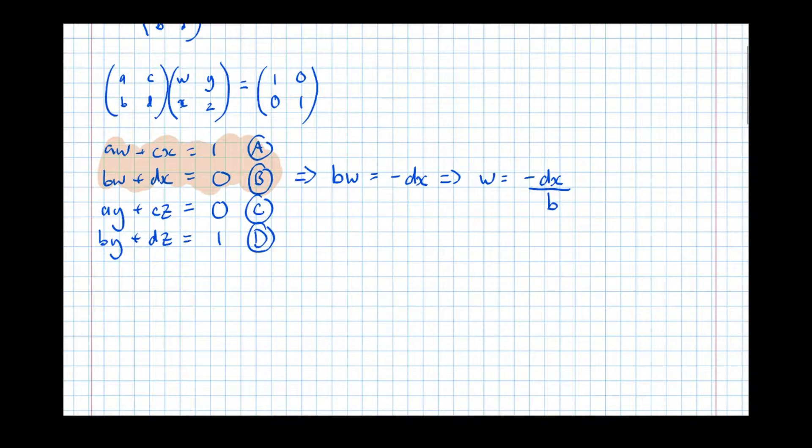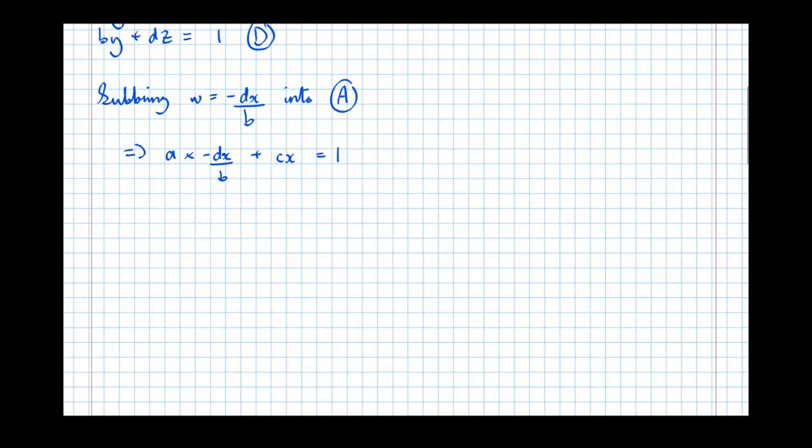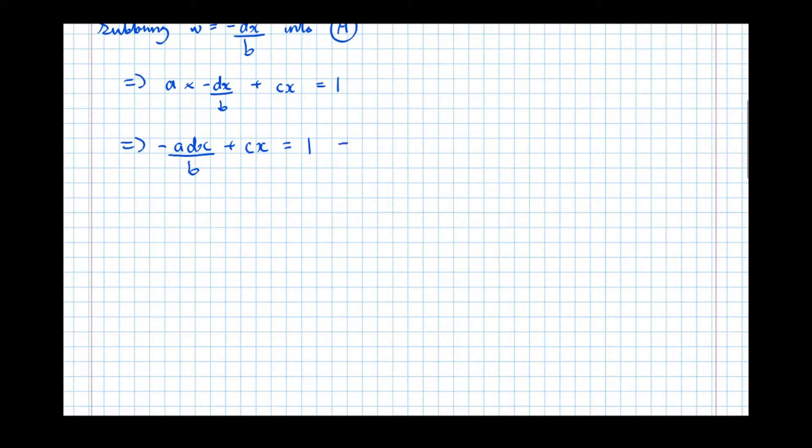So now if we substitute that into the other equation, equation A, subbing W equals minus DX over B into A. So then we get A times W, but in this case we know W is minus DX over B. So A times minus DX over B plus CX equals 1. So then let's just write this nicely. Let's neaten it up a little bit, simplify it. We get minus ADX over B plus CX equals 1.